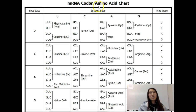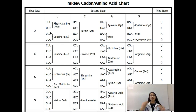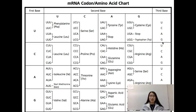How do you know what amino acid each codon is supposed to code for? You look at an mRNA codon amino acid chart. This chart uses RNA because there's U instead of T. You read the first base on the left, second base going across, and then find the third base on the right. For example, AUG: you find A on the left, look across to U, and find AUG codes for methionine — which is also the start codon that signals where translation is supposed to begin.